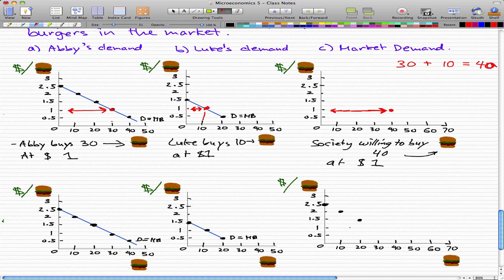Now at $1, we already calculated that Abby will buy at most 30, and Luke will buy at most 10. And that will give us not 30, but 40 burgers. So at the 40th burger, the most that society is willing to pay is $1.